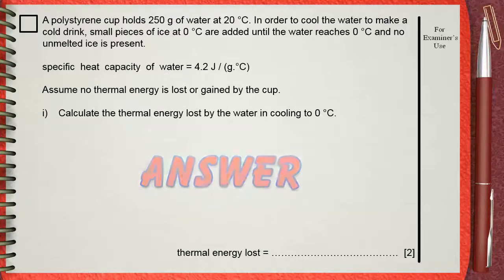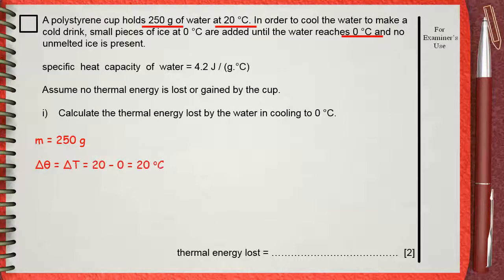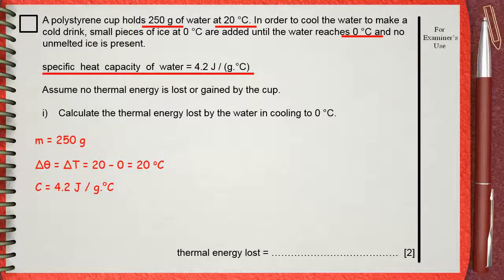Let's pick out our givens. We have 250 grams. The initial temperature of water is 20 degrees Celsius and it will cool finally to zero degrees Celsius, so delta T will be 20. The specific heat capacity of water, C, is 4.2 joules per gram dot degree Celsius. These are the givens.